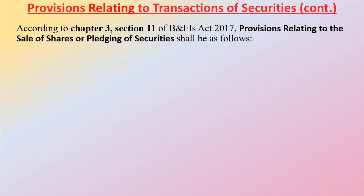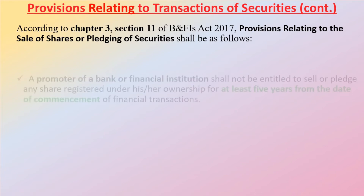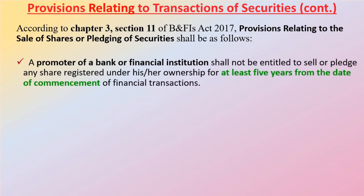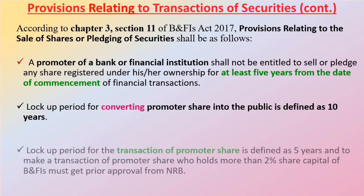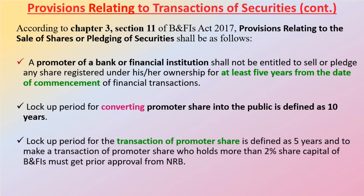A promoter of the bank or financial institution shall not be entitled to sell or transfer any share registered under his or her ownership for at least five years from the date of commencement of financial transaction. The lockup period for converting promoter shares into public shares is defined as 10 years. Similarly, the lockup period for the transaction of promoter shares is defined as five years. To make a transaction of promoter shares, anyone who holds more than two percent share capital of the bank or financial institution must get prior approval from Nepal Rastra Bank.